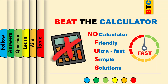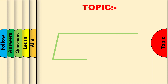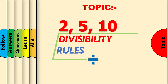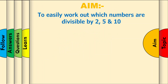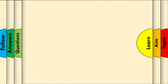This video is presented by Beat the Calculator. Today's topic: 2, 5, and 10 divisibility rules. Today's aim: to easily work out which numbers are divisible by 2, 5, and 10 with no calculator. For example, you'll be able to work out if 34 is divisible by 2 in less than 2 seconds. Let's learn.